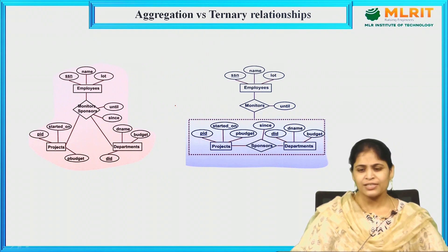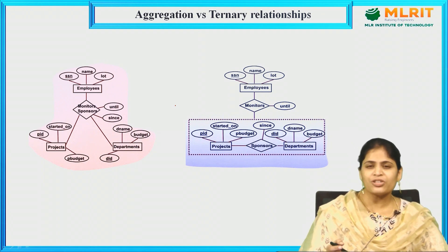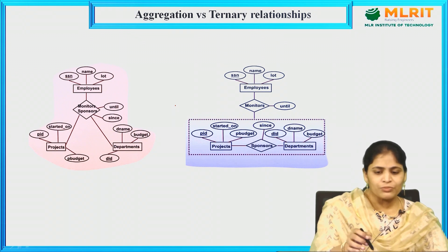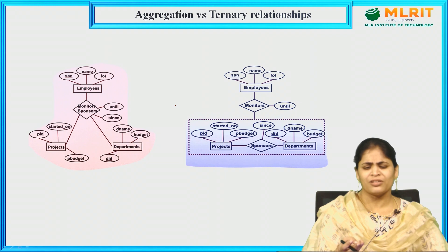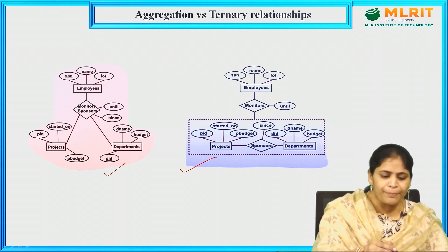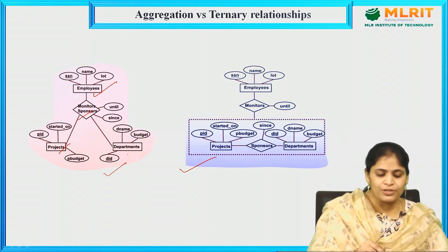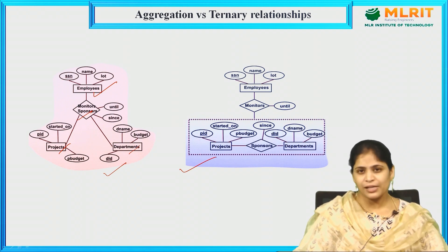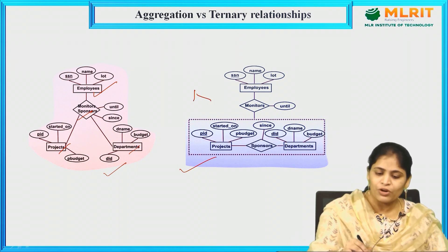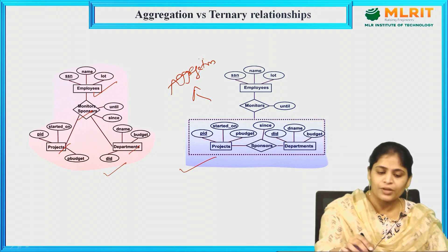The last concept is aggregation versus ternary relationship. As discussed in the last video, aggregation is used to relate two particular sets of entities. The question is whether we should consider an aggregation-type ER model or a ternary relationship. Consider this example: employees monitor projects sponsored by departments. Here we have three entities — employees, projects, and departments — and two relationships: monitors and sponsors. The first model uses aggregation and the second uses a ternary relationship.